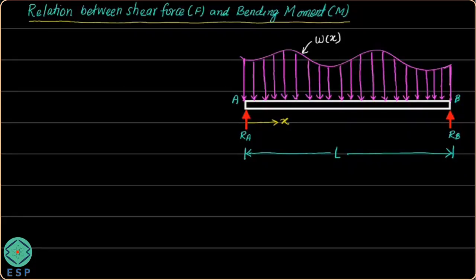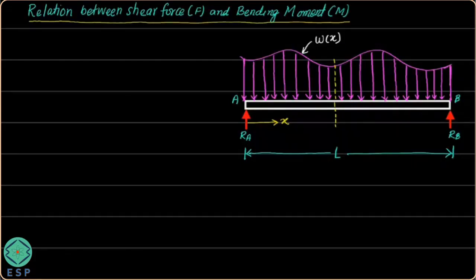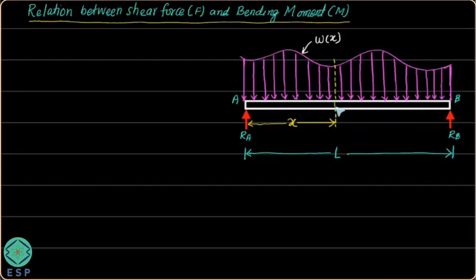Now we would like to find out the variation of shear force and bending moment at a particular point. So I am going to take a section at a particular point. Let's say at distance X from point A I have taken a section, and at that particular section I would like to find the variation of shear force and bending moment. Let me call this point as point C.